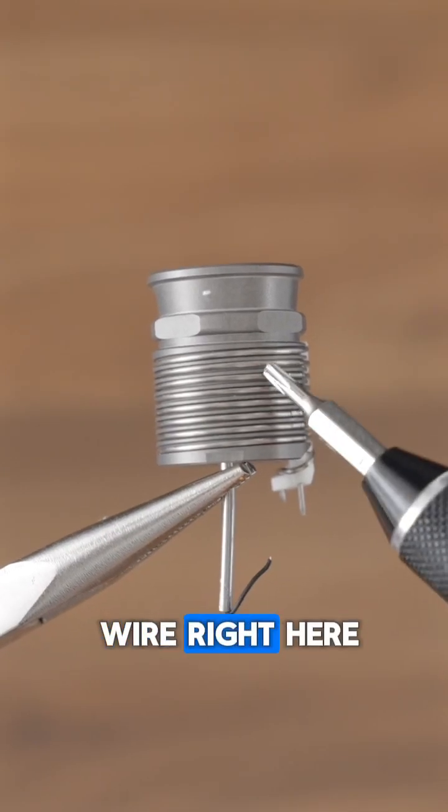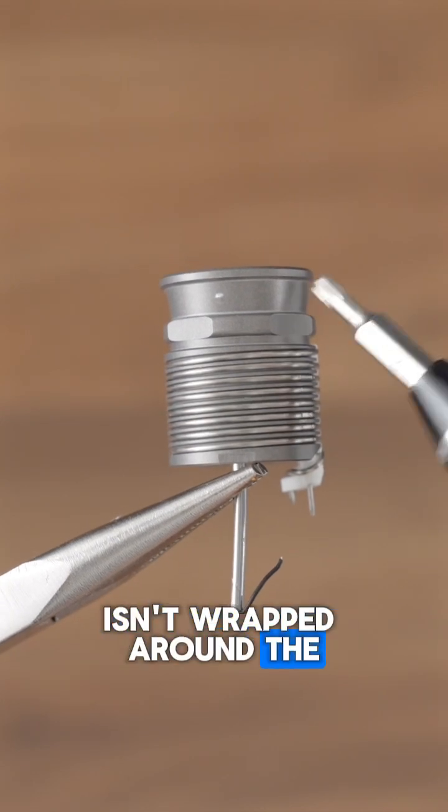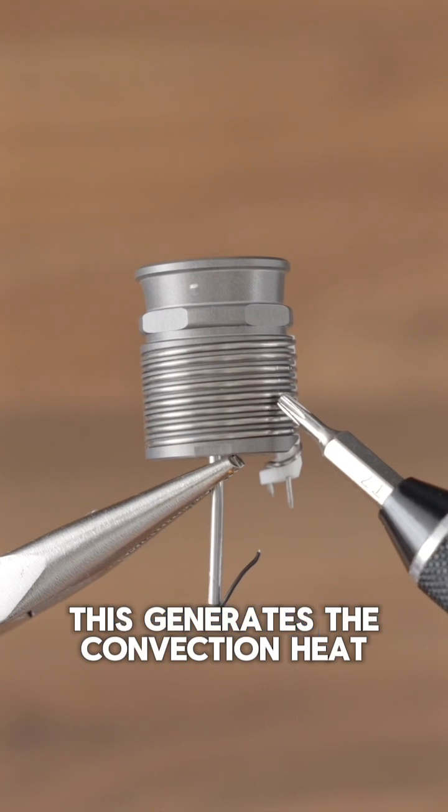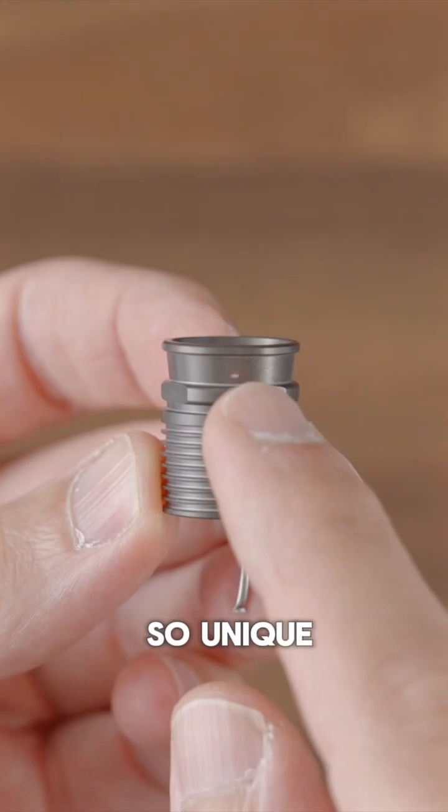Notice how the heating wire, right here, isn't wrapped around the chamber itself but sits under it. This generates the convection heat that makes the venti so unique.